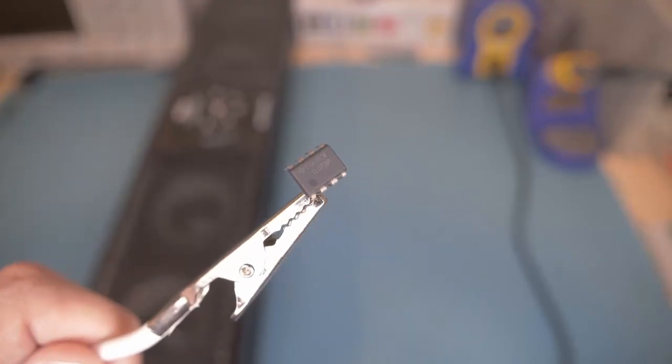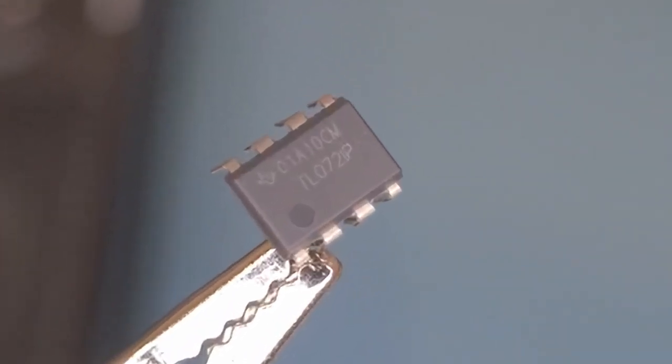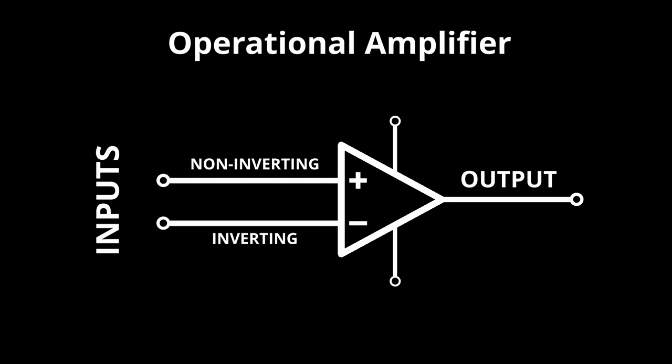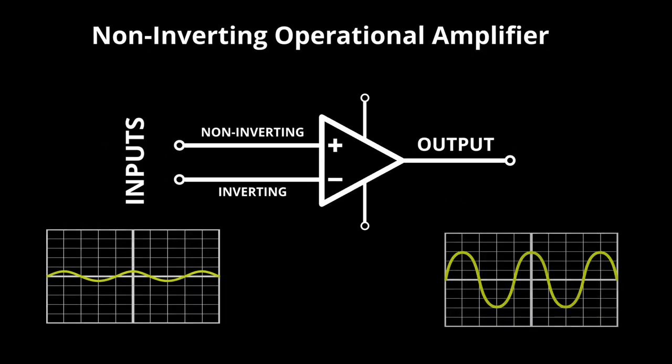This is a TL072IP dual op amp that I bought online. You can configure an op amp in a variety of ways to get different effects out of it, but the configuration that we need is what is called a non-inverting amplifier circuit. An inverting amplifier would flip the audio signal, and we don't want that.